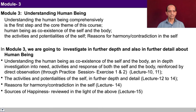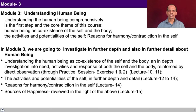Looking at the organization of the lectures: understanding the human being as coexistence of self and body, and in-depth investigation into the needs, activities and response of both the self and the body — reinforced by direct observation through practice sessions — will be covered in lectures 10 and 11. Lectures 12 to 14 will cover activities and potentialities of the self. Lecture 14 covers reasons for harmony and contradiction, and lecture 15 reviews various sources of happiness.